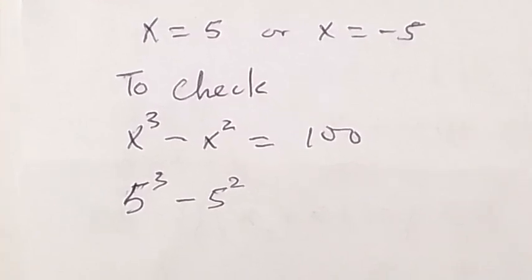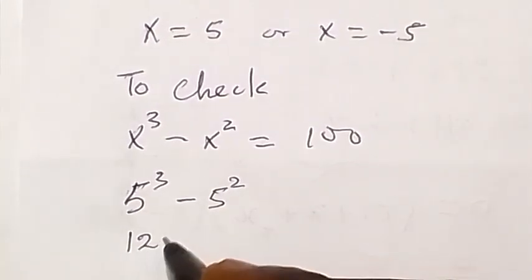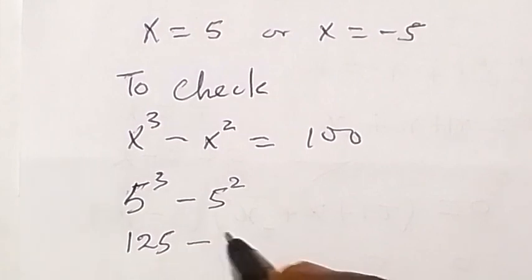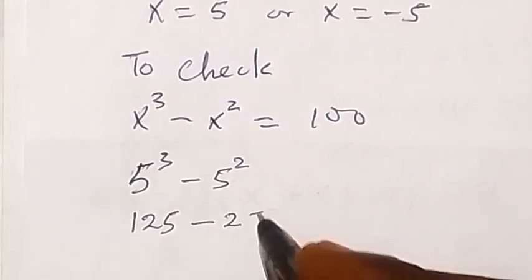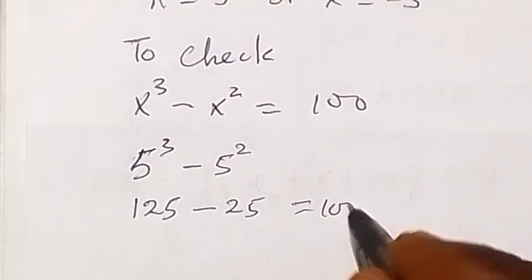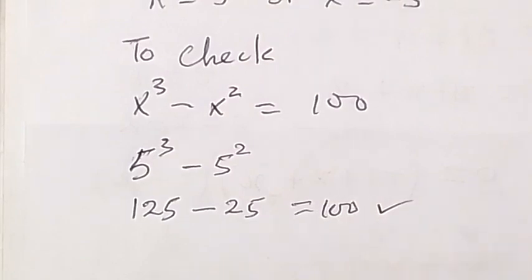Let's put when x is 5, that's 5 cubed minus 5 squared. 5 cubed gives us 125.